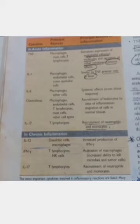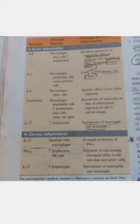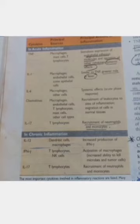Chemokines are produced by macrophages, endothelial cells, T-lymphocytes, mast cells, and other cell types. They involve recruitment of leukocytes to the site of inflammation and act as chemotactic agents. Interleukin-17 is secreted from T-lymphocytes and is involved in the recruitment of neutrophils and monocytes. Interleukin-17 also causes the secretion of other interleukins, for example interleukin-6 and colony stimulating factors.